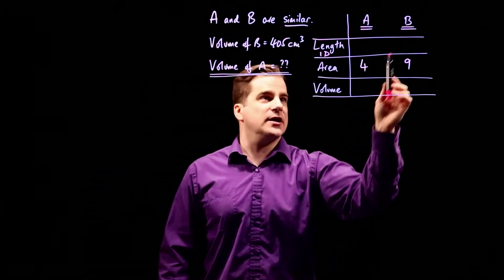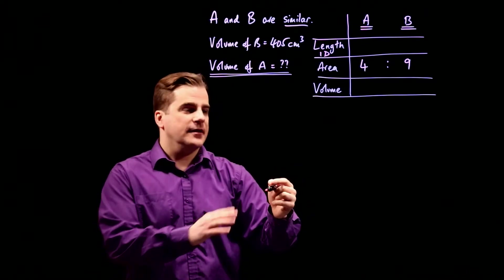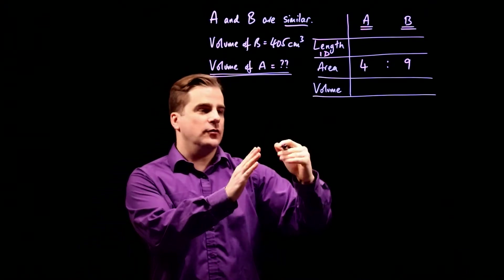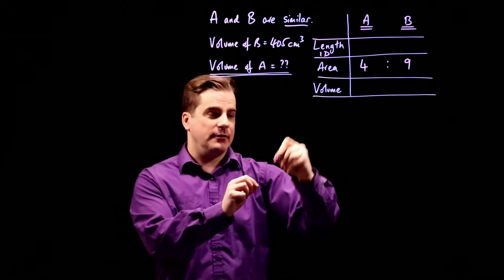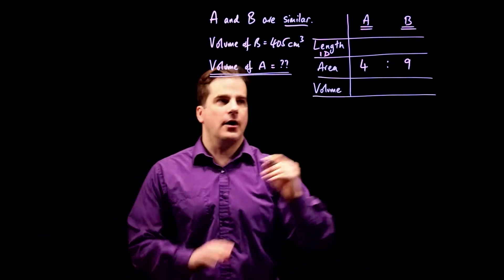Area is two dimensional, volume is three dimensional, length is just some one dimensional property. And we're going to work out the ratio of, let's say, if you looked at the same side on both A and B, then that would be the length of that side, but it could be any of the sides on both A and B.